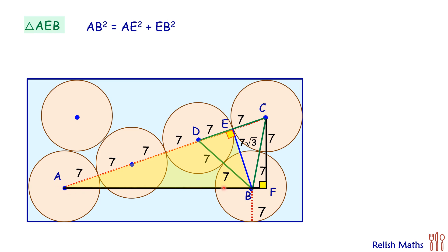AB is what we have to find, AE is 35, and EB is 7√3. Putting these values here and solving, we'll get the value of AB as 14√7 centimeters.